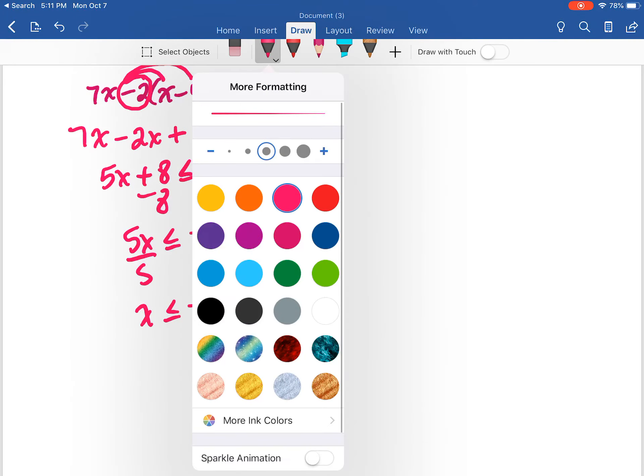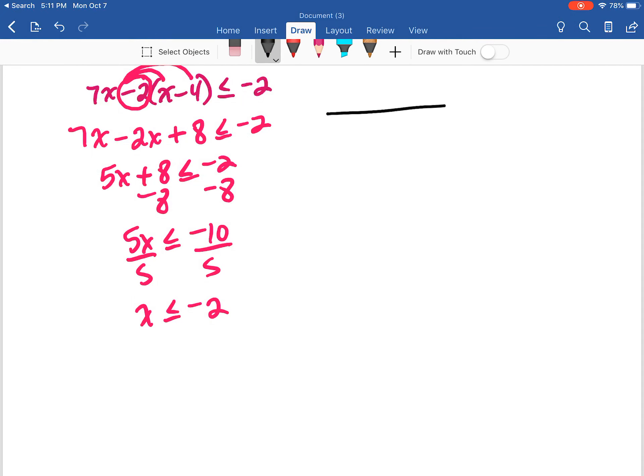All right, so now we're going to graph this. I've got negative 2, negative 1, and negative 3. Now, this is a closed circle, right? So that is included.